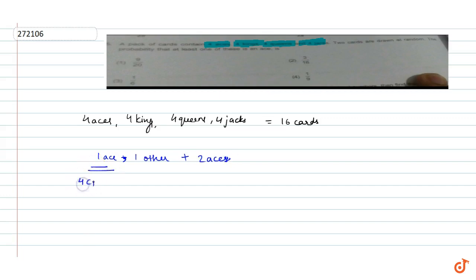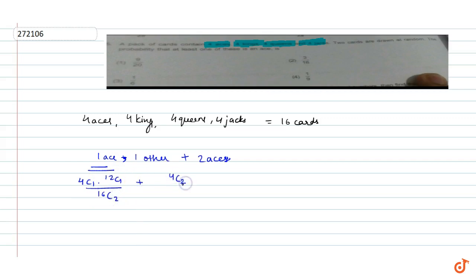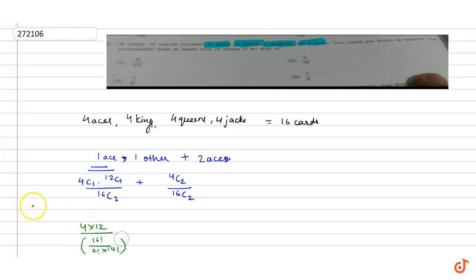तो one ace निकालने की probability: four में से one card ace का हो और बाकी twelve में से one card हो, and sixteen में से हमने two cards लिए। Plus four aces में से two cards लिए और sixteen C two। That is: 4×12 upon 16C2, plus 4C2 upon 16C2.